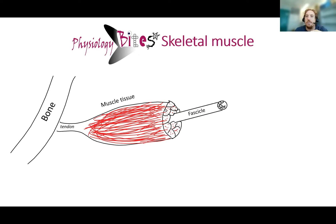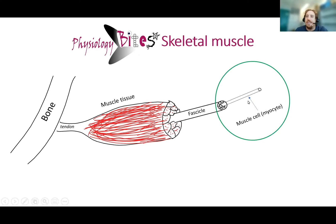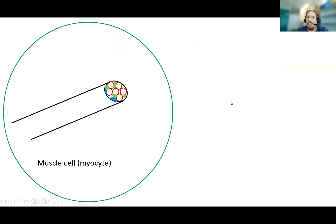When we look at skeletal muscle tissue, it's just a bundle of muscle cells — bundles of muscle cells bound by various layers of connective tissue. So let's look at the muscle cell itself to see how contraction actually occurs.